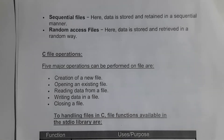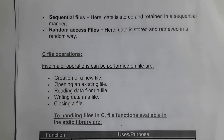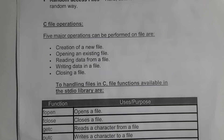Files are also classified into two categories: sequential files and random access files. In sequential files, data is arranged in a sequential manner — for example, roll number one, roll number two, roll number three, and so on. In random access files, data is not arranged sequentially — it can be in any order, like roll number one, roll number 32, roll number 44, and so on.